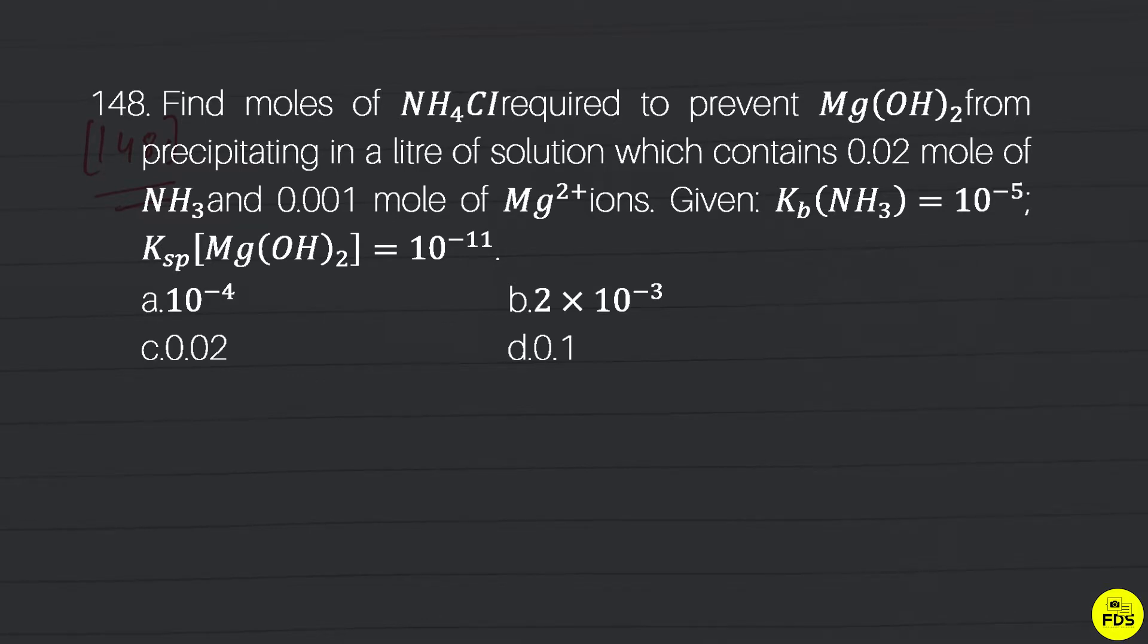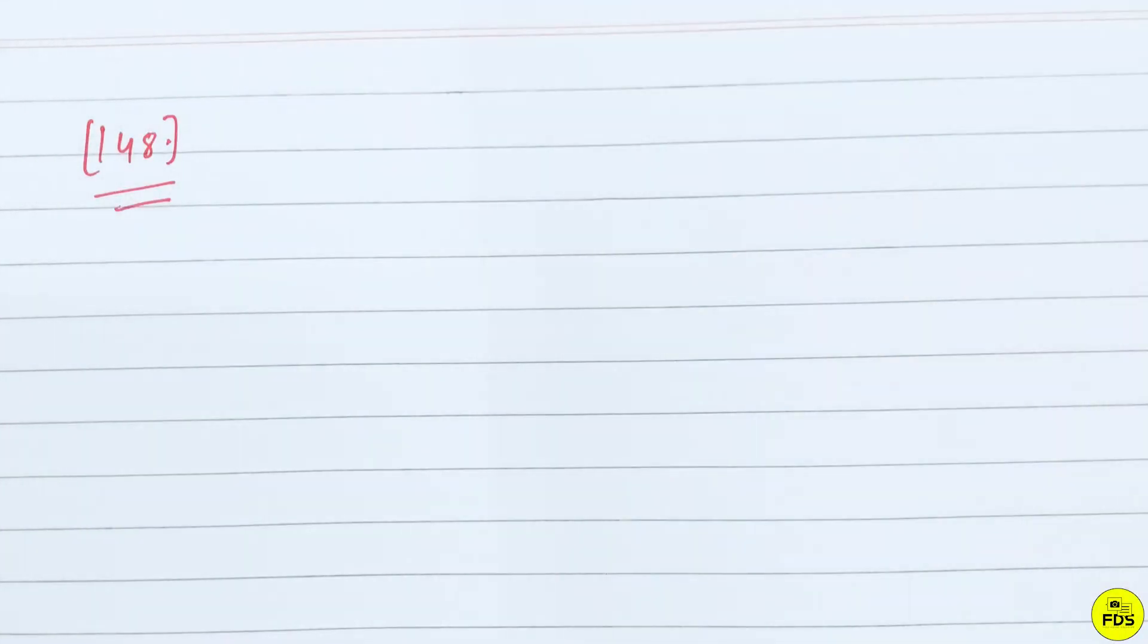Given Kb value of NH3 is equal to 10 raised to power minus 4 and Ksp of Mg(OH)2 is equal to 10 raised to power minus 11.